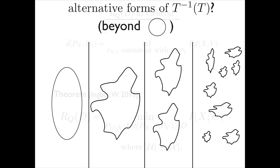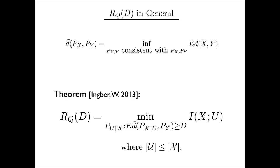This leads us to the question: what is R_Q(D)? It's given in terms of the D-bar distance. The D-bar distance between two distributions P_X and P_Y is the expected distortion — the expected D between X and Y — minimized across all joint distributions on X and Y consistent with P_X and P_Y. The rate-distortion function is given as a mutual information between X and U, minimized over all conditionals on U given X, under which the D-bar distance between the induced posterior on X given U and the distribution of the query sequence P_Y is greater than or equal to D.